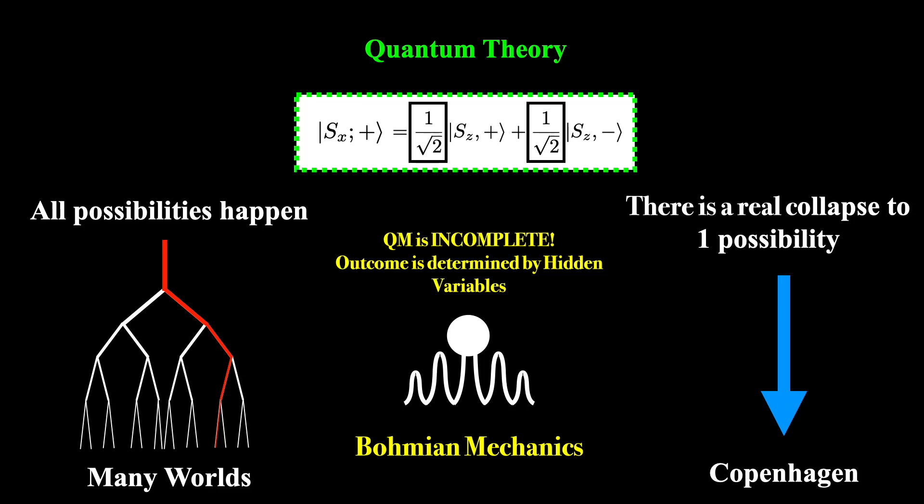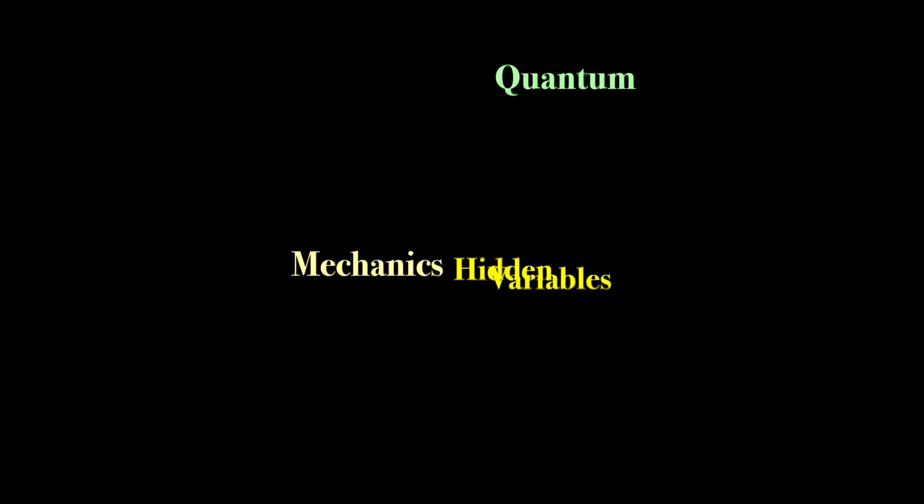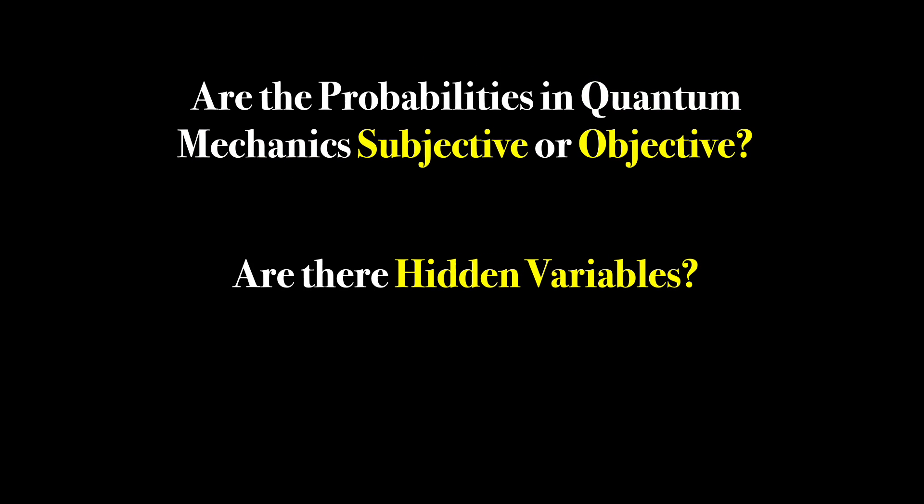But whichever is correct, there are two key questions that any theory will need to be able to answer. Are the probabilities in quantum mechanics subjective or objective? And, are there any hidden variables? These questions are still not fully answered in a satisfying way by any of these theories, and they continue to be debated by physicists today.